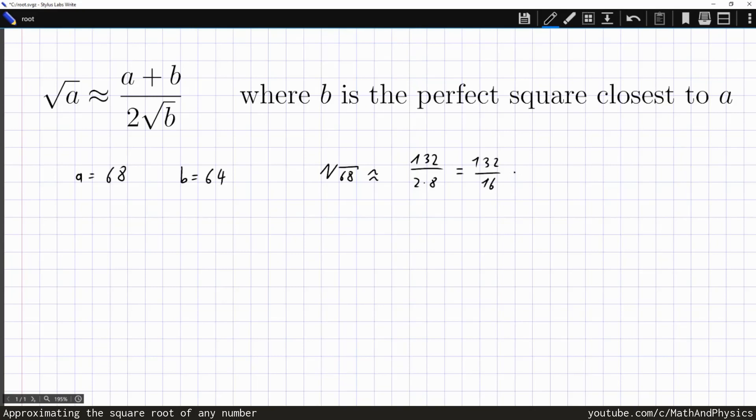Which we can divide by 4, so 132 by 4 is 25 plus 8, that's 33 divided by 4, and this is nothing but 8.25. The actual value for the square root of 68 is 8.2462 and so on. So you can see this is actually a really good approximation.